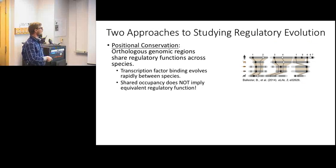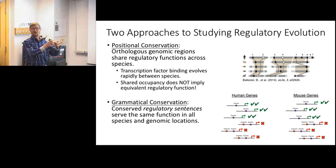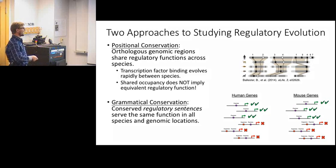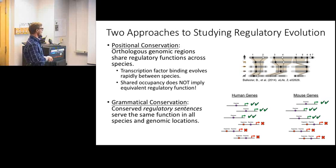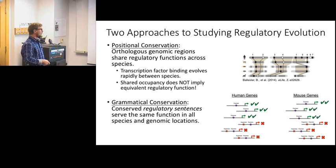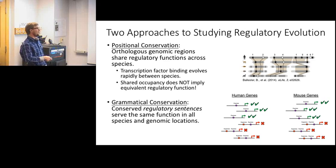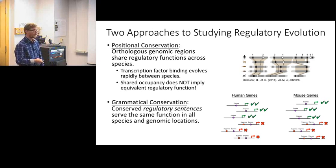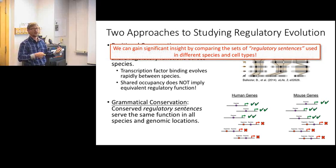We proposed an alternative called grammatical conservation, which operates at the gene regulatory language level rather than the sequence level. Instead of looking for shared sequences, we define conservation as sharing of regulatory sentences between species regardless of where they live in the genome. Our assumption is that conserved regulatory sentences serve the same function in all species and all genomic locations. By comparing these sets of regulatory sentences and how they're used across species, we believe we can gain significant insight into regulatory evolution and function.